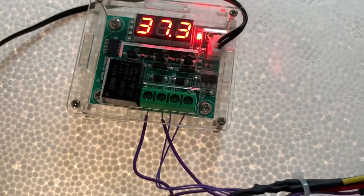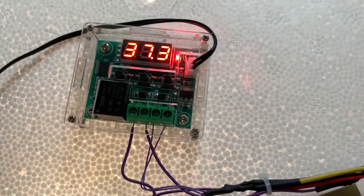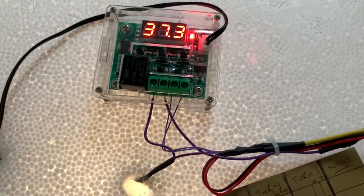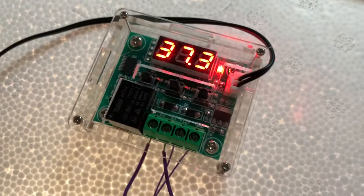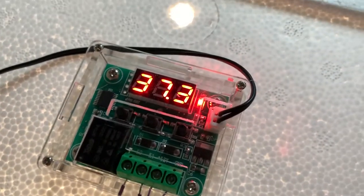When it gets to 37.3 it comes on, which turns on the little lighting inside which has a little halogen bulb, 12 volt 20 watts. It gives off quite a lot of heat and once it warms up to 37.7 it goes off.